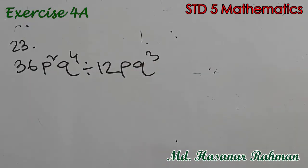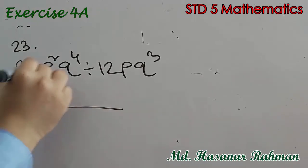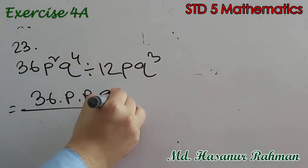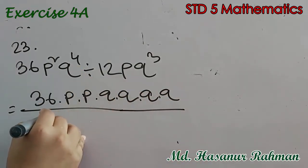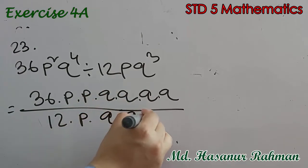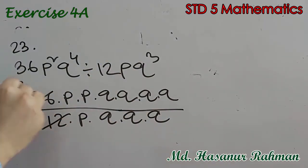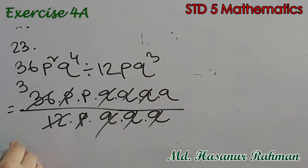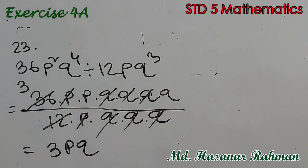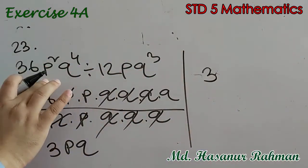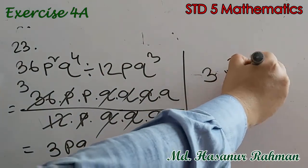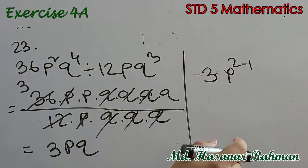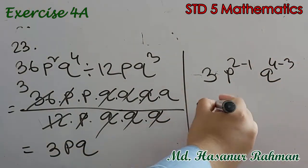Number 23 says 36p squared q to the power 4 divided by 12pq cubed. Expanding: 36 into p into p into q into q into q into q, divided by 12 into p into q into q into q. 36 by 12 is 3. One p cancels, and three q's cancel, leaving p and one q. So the answer is 3pq. Alternatively: 36 by 12 is 3, p to the power 2 minus 1 gives p, and q to the power 4 minus 3 gives q, so 3pq.